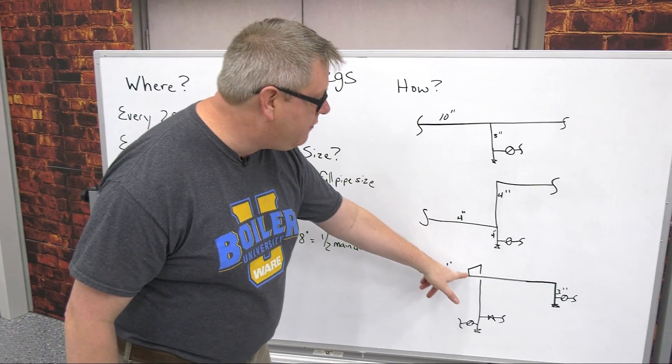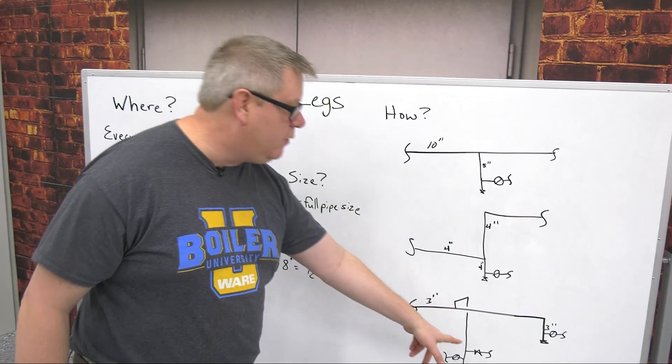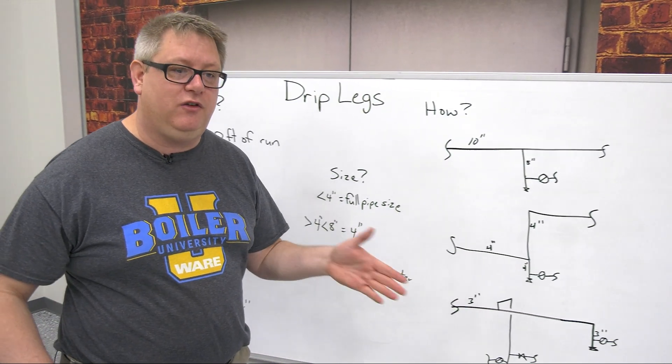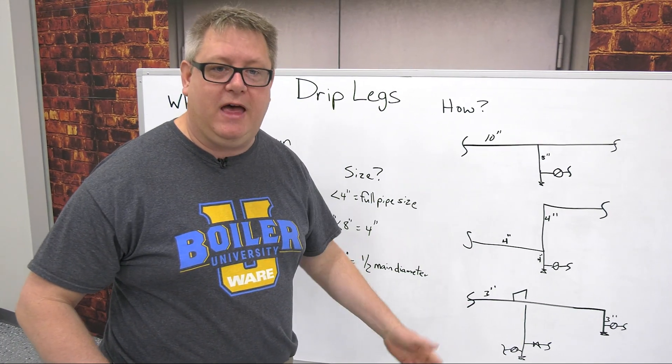So we want to pull off the top of the pipe, over a 90, down to our equipment. And because that equipment's going to have some sort of isolation or control valve, we're going to have a trap down there to keep that header clear.